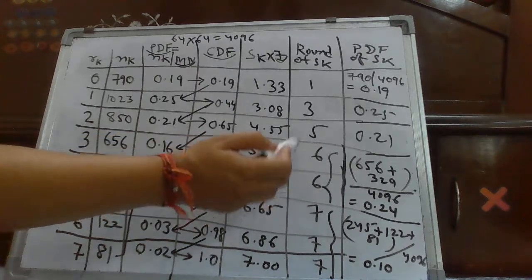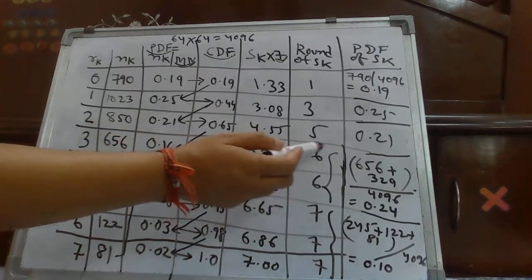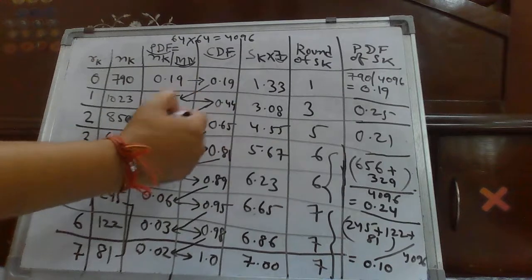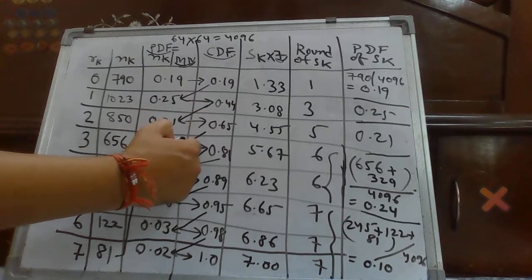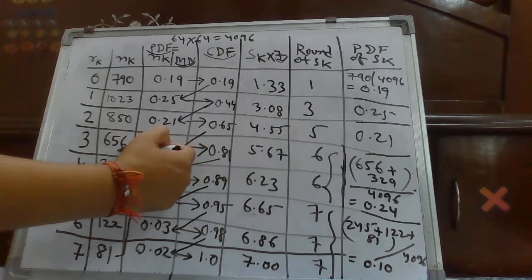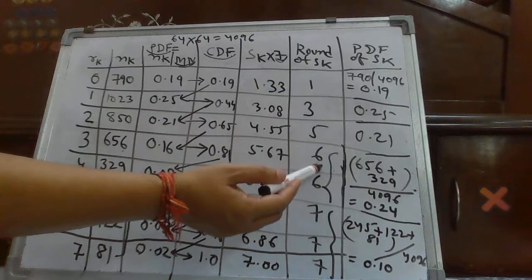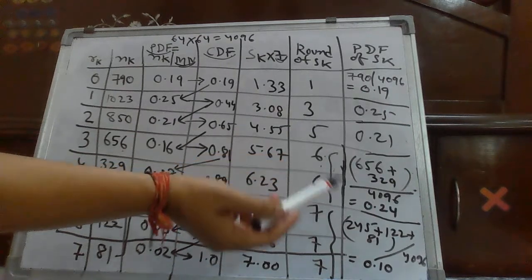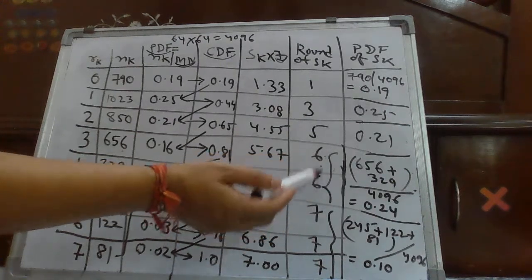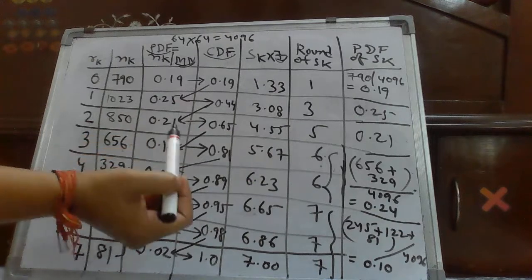PDF of probability of number of occurrence of that particular output image must be added and divided by that whole number of images. So, roughly what you will do in order to get the PDF of SK of this or this having same, that you will add 655 plus 325.